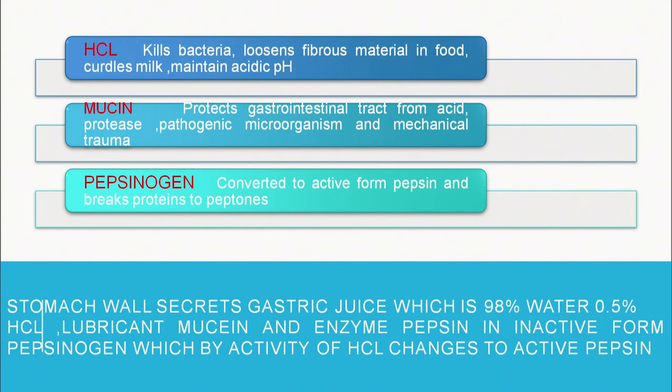Besides HCl and pepsinogen, another compound produced in the stomach is mucin. Mucin protects the gastrointestinal tract from acid proteases, pathogenic microorganisms, and mechanical trauma, because the low pH could otherwise damage the stomach walls. The stomach wall secretes gastric juice, which is 98% water, 0.5% HCl, lubricant mucin, and the enzyme pepsin in inactive form — pepsinogen — which is activated by HCl and ultimately breaks down proteins into smaller peptides.